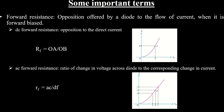Let's recall some important terms used in the context of diodes. The first is forward resistance — the opposition offered by a diode to the flow of current when it is forward biased. Forward resistance is of two types: DC forward resistance and AC forward resistance.